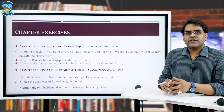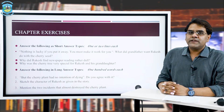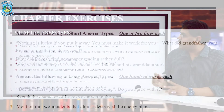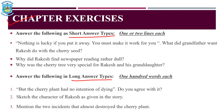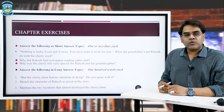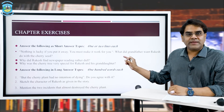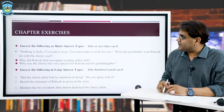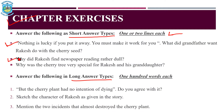This slide is going to cover the chapter exercises, taking up some short answer type and long answer type questions. The short answer types will be of one or two lines each. The first question: 'Nothing is lucky if you put it away — you must make it work for you. What did grandfather want Rakesh to do with the cherry seed?' The second question: 'Why did Rakesh find newspaper reading rather dull?' Question number three: 'Why was the cherry tree very special for Rakesh and his grandfather?'